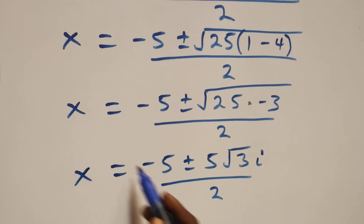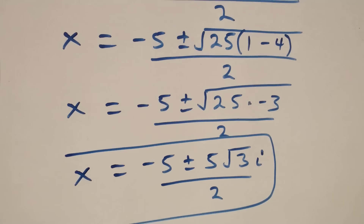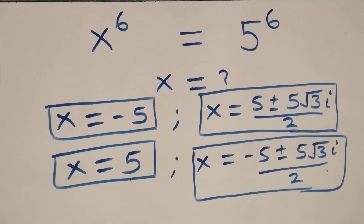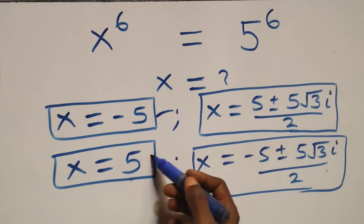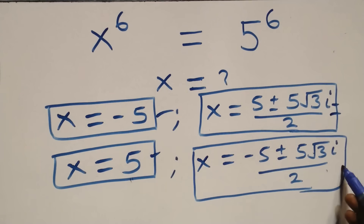And therefore, all together we have six solutions in this problem: two real solutions and two pairs of complex solutions. Thank you for watching, don't forget the steps, subscribe for more videos, and turn the notification bell on. Share this video with a thumbs up and put your comments. See you next time, bye for now.